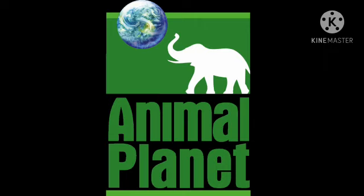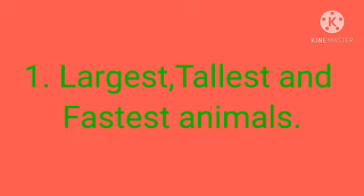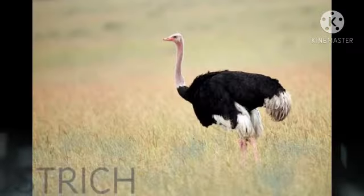Our lesson is divided into five parts: first, largest, tallest and fastest animals; second, mammals and reptiles; third, carnivores and herbivores; fourth, habitats; fifth, birds and their beaks. So let us start first with largest, tallest and fastest animals.